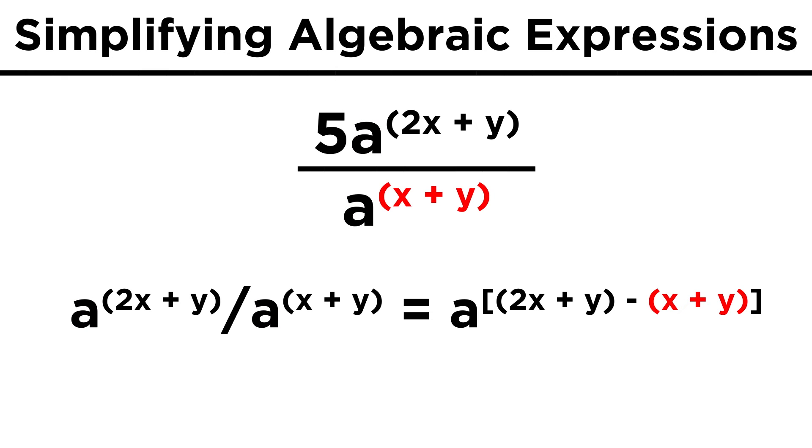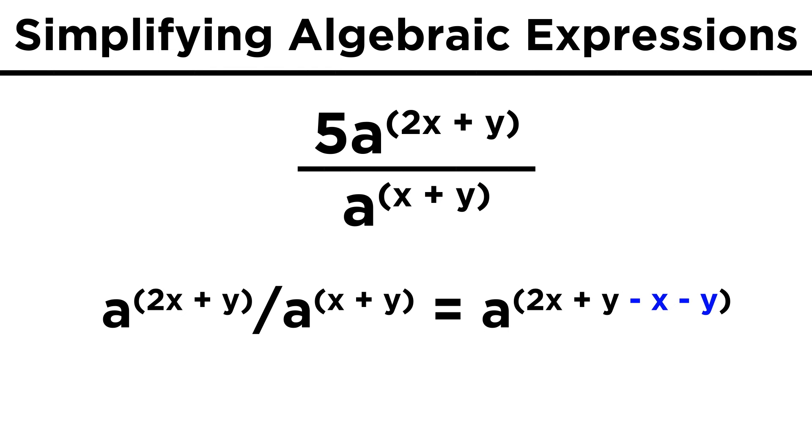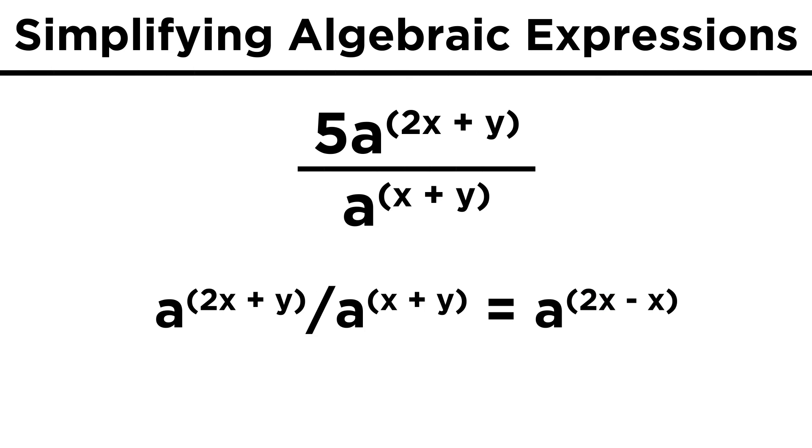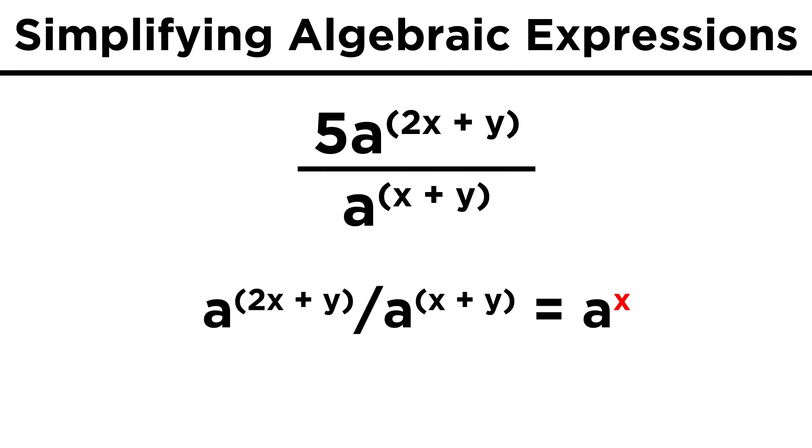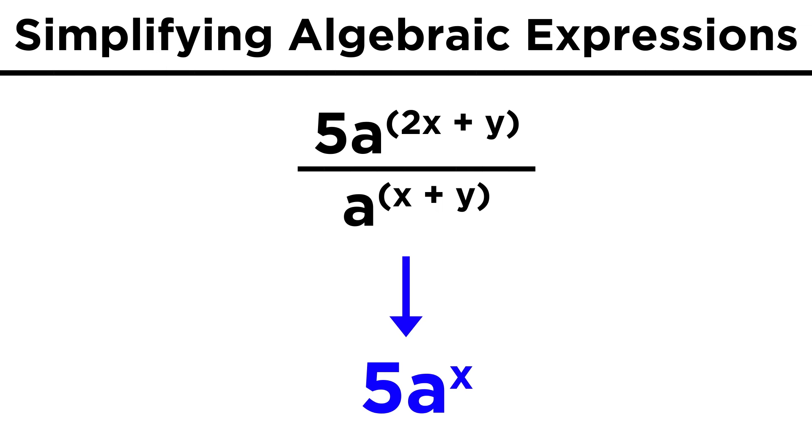Then remember that we have to subtract the entire exponent in the denominator, so we need parentheses to do this. The negative sign will then distribute, leaving us with a to the two x plus y minus x minus y. Combining like terms, y minus y goes away, and two x minus x leaves us with simply x, so the final answer is five a to the x.